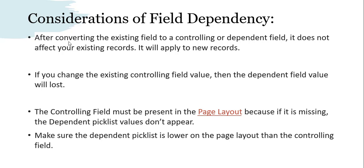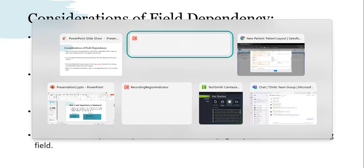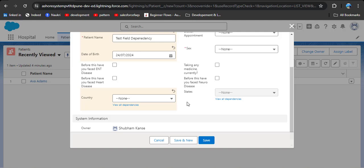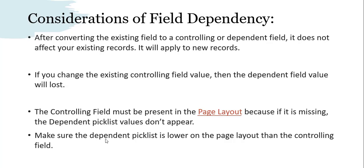There are also considerations while creating field dependency. After converting an existing field to a controlling or dependent field, it does not affect existing records — it will apply to new records only. If you change an existing controlling field value, the dependent field value will be lost. The controlling field must be present in the page layout, because if it is missing, the dependent picklist values won't appear. If you don't apply the controlling field on a page layout, the dependent field will not work.